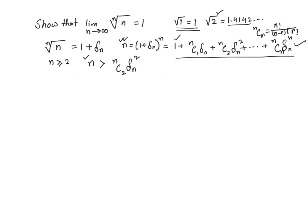If that is the case, I could do the following: n must be greater than nc2, which is n factorial over n minus 2 factorial times 2 factorial, times delta sub n square.